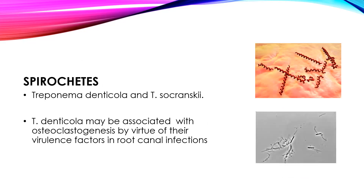Spirochetes are spiral microorganisms, and the organisms responsible for root canal infection from the spirochete species are Treponema denticola and Treponema socranskii. These may be associated with osteoclastogenesis because of their virulence factors in root canal infections.